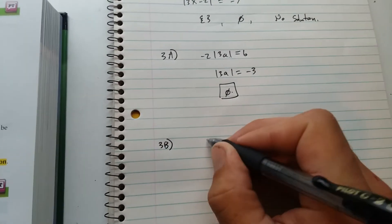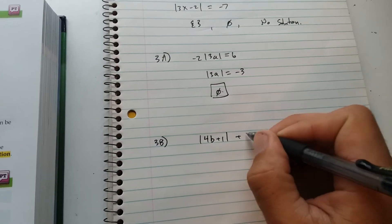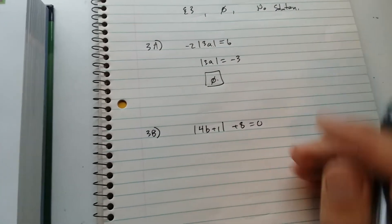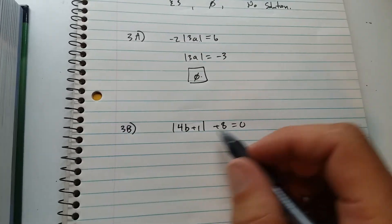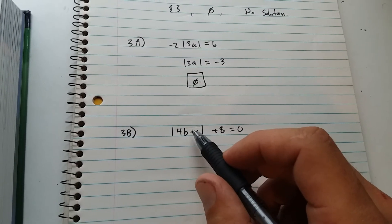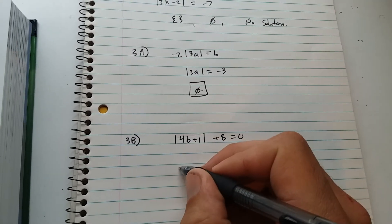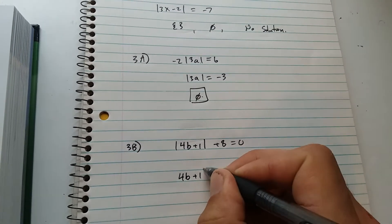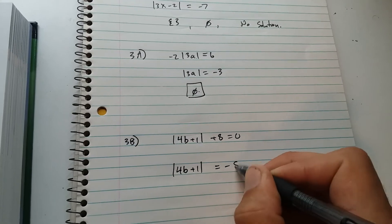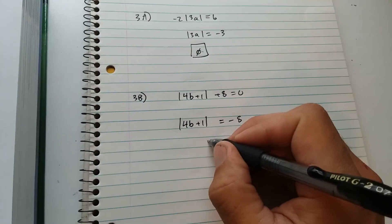3b is absolute value of 4b plus 1 plus 8 equals 0. Again, to solve this, you've got to get the absolute value quantity all by itself on the left-hand side. So we've got to subtract 8 from both sides. An absolute value cannot be negative, so this is no solution.